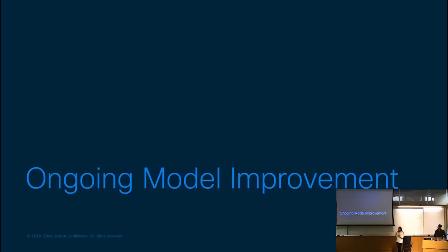That was a very high level overview of all of the components needed to build a conversational application. Now I'll briefly talk about some concepts around ongoing model improvement and how you can continue to improve your model once it's deployed and in production. This is actually a very key piece of most machine learning products because once you have real user data, you can significantly improve your models. This is how most industry leaders in the machine learning space have become industry leaders.